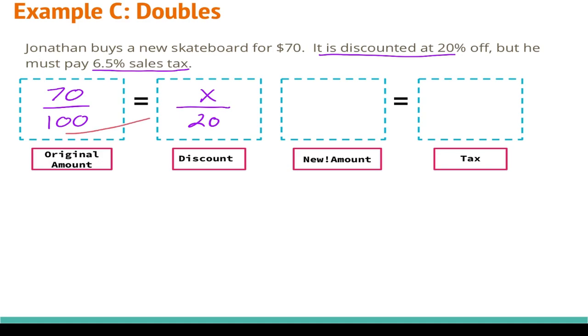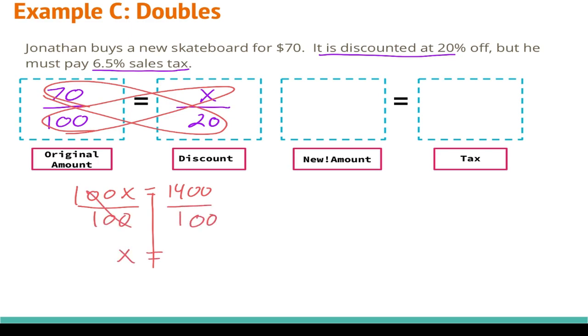Now we're going to cross multiply. We're going to do 100 times x and 20 times 70. 100 times x is 100x. 20 times 70 is going to be 1400. We're going to draw our wall, divide both sides by 100, and we're going to get that x equals 14. So 14 is the amount of the discount, but that's not how much the skateboard costs now. That's how much money we're getting off. So we need to do 70 minus 14 to figure out how much money the skateboard still costs us. 70 minus 14 is going to be $56.